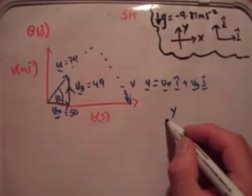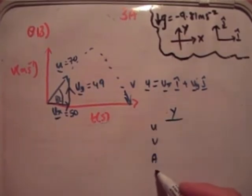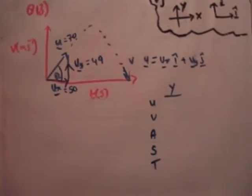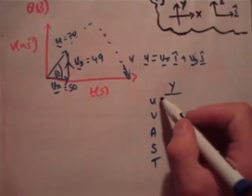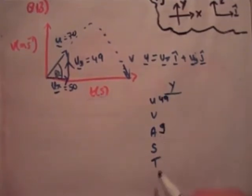So what is u? u is 49. The acceleration is g. The time is t. That's all we know.